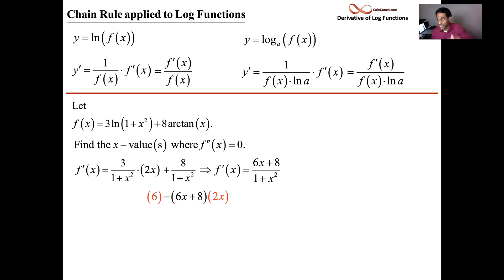The derivative written in one fraction is 6x plus 8 on top of 1 plus x squared. Sorry about the animation being out of order there. Now we're going to take a second derivative because this question is saying, where's the second derivative equal to 0?